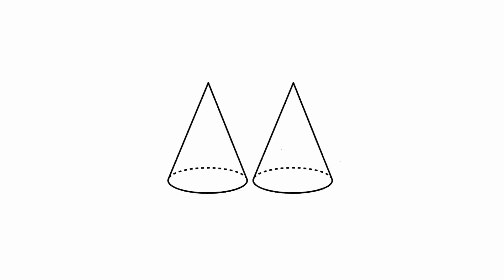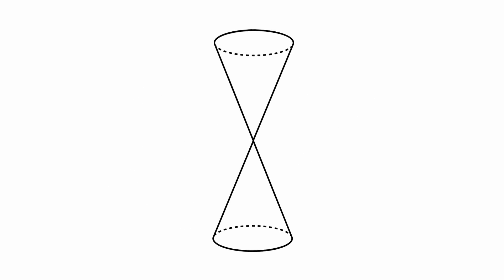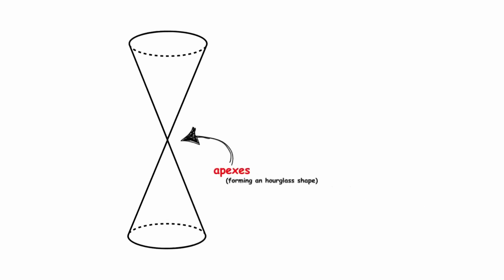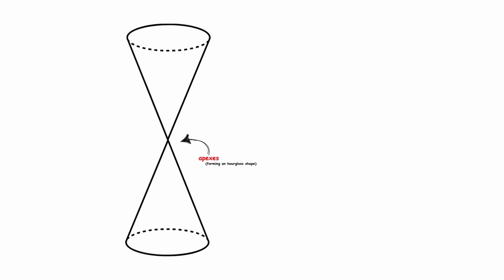Conic Section. Let's take two hollow cones, one of them an upside-down copy of the other. We'll place them so that their apexes, or tips, touch, forming an hourglass shape. Then let's imagine that each cone extends infinitely away from its apex. What we are left with is an object called a double cone.